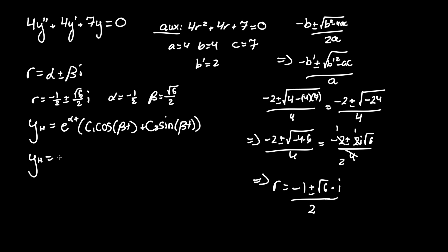Plugging alpha and beta in, e to the negative 1 half t times c1 cosine of radical 6 over 2t plus c2 sine of, again, radical 6 over 2t.